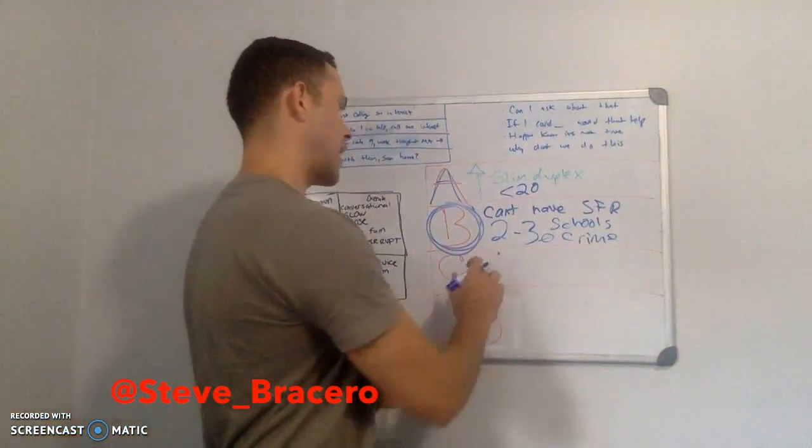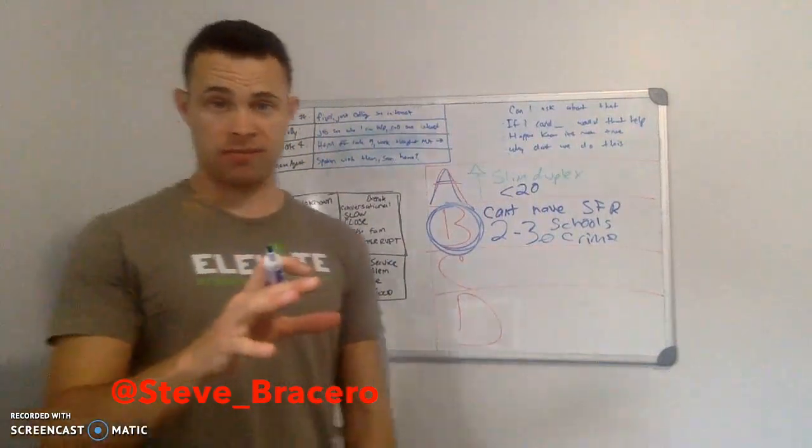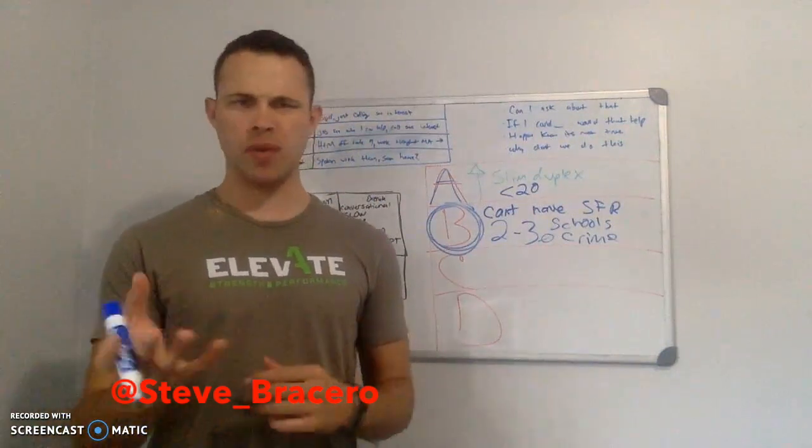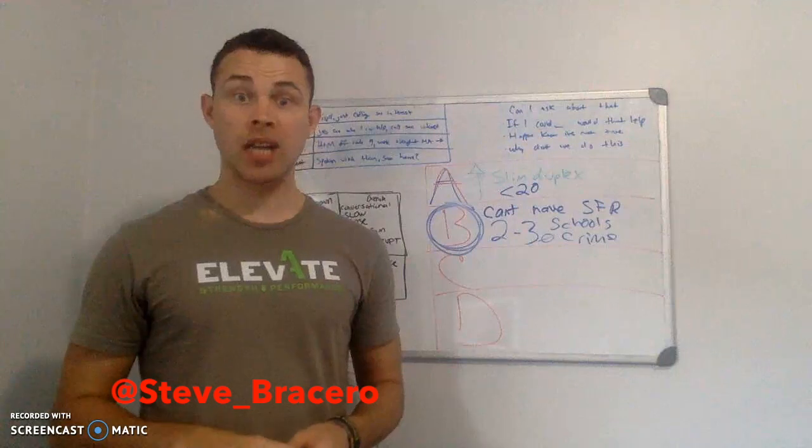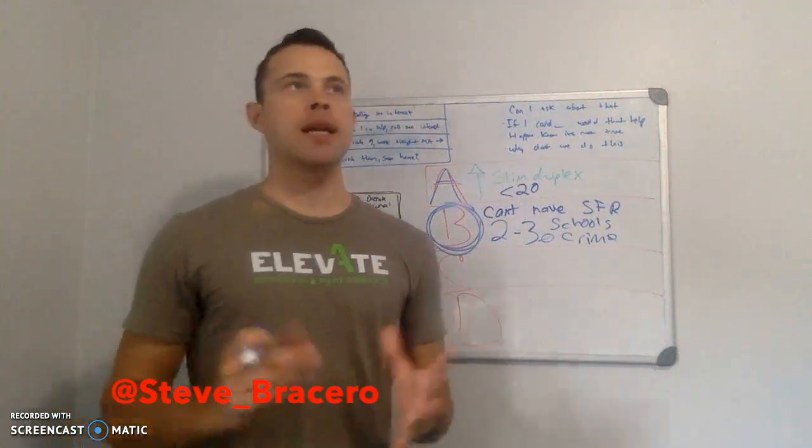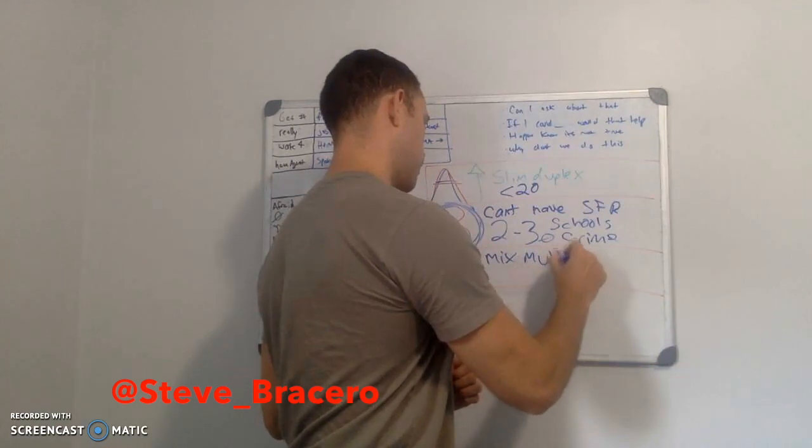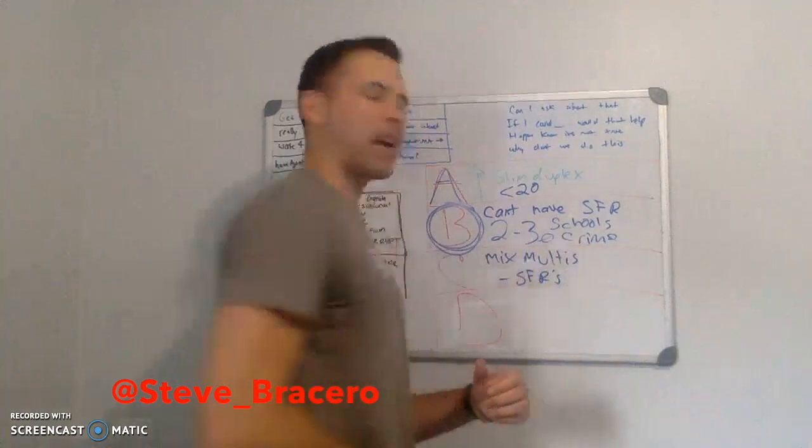Next, we're looking at a C class area. I would say there's many C class areas in Worcester. Many C class areas. But there are probably 20, 25 little individual communities in Worcester. But a lot of them are C class, which means you have a mix of multis and single families.